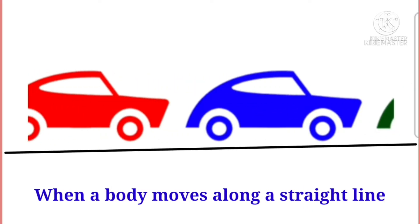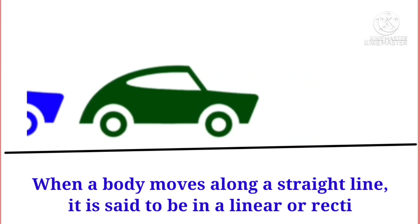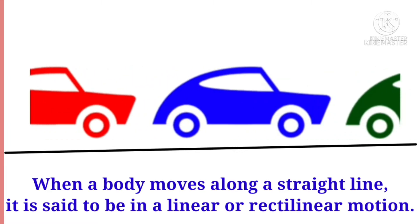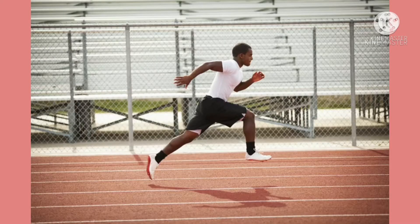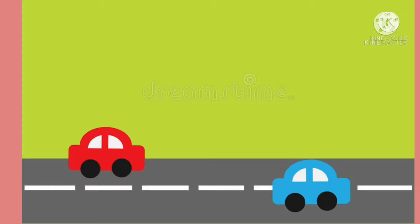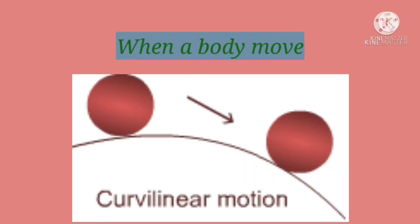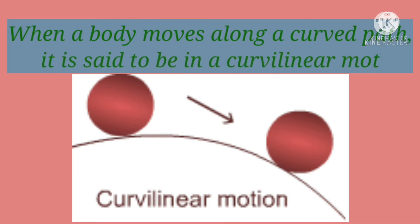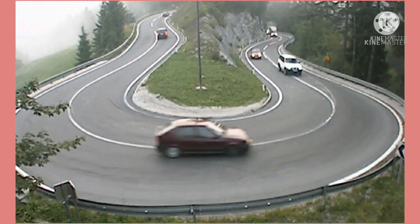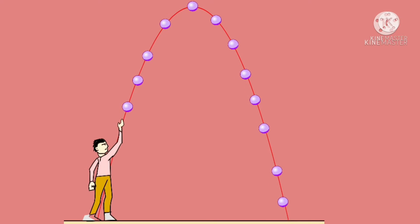When a body moves along a straight line, it is said to be in linear or rectilinear motion. An athlete running on a straight path, a freely falling apple, or a car moving on a straight road are some examples of rectilinear motion. When a body moves along a curved path, it is said to be in curvilinear motion. A car moving along a curved path and a ball thrown up in the air are some examples of curvilinear motion.